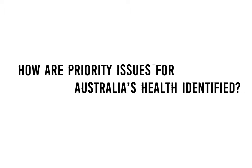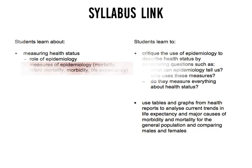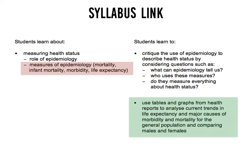This presentation will address the focus question: how are priority issues for Australia's health identified? It will focus on measuring health status, specifically on measures of epidemiology — incidence and prevalence — and look at tables and graphs from health reports to examine current trends, major causes of disease in the population, and compare males and females in some cases.